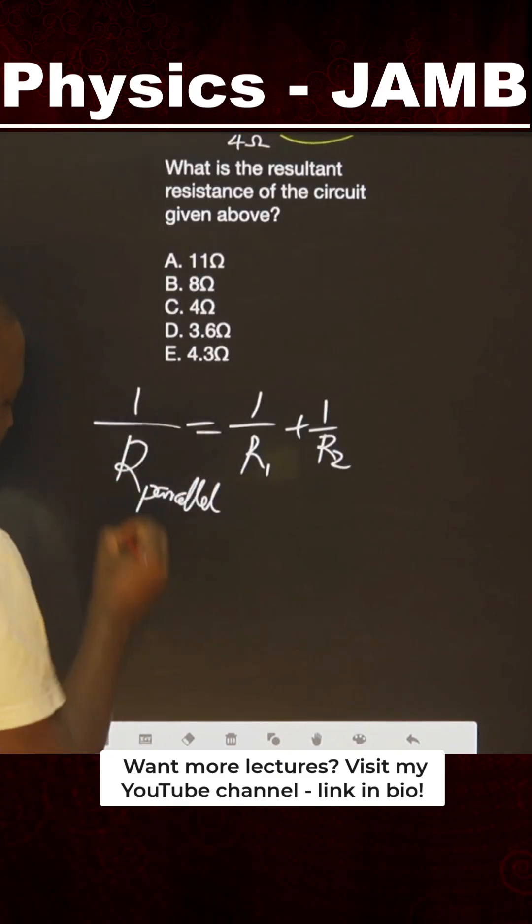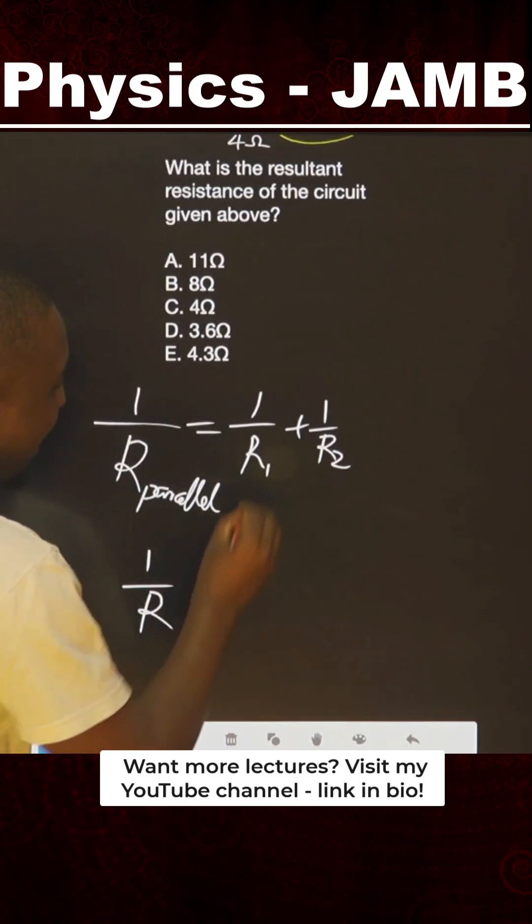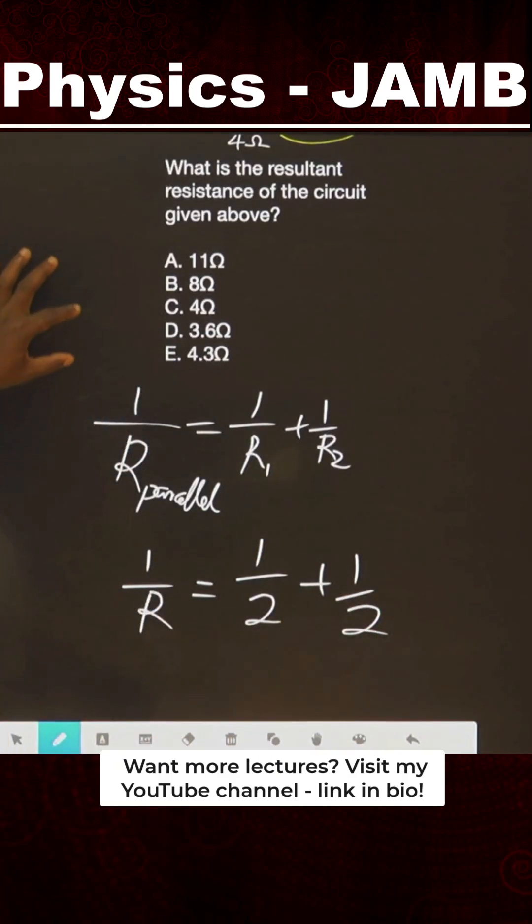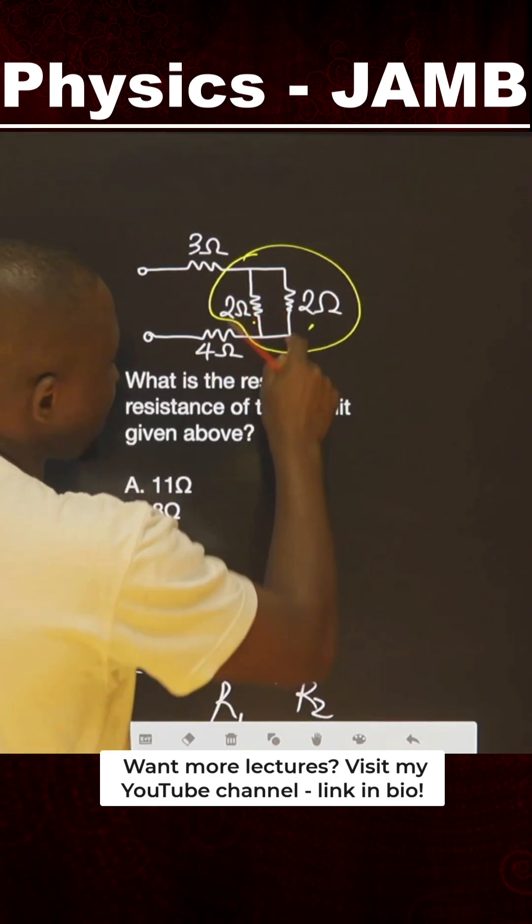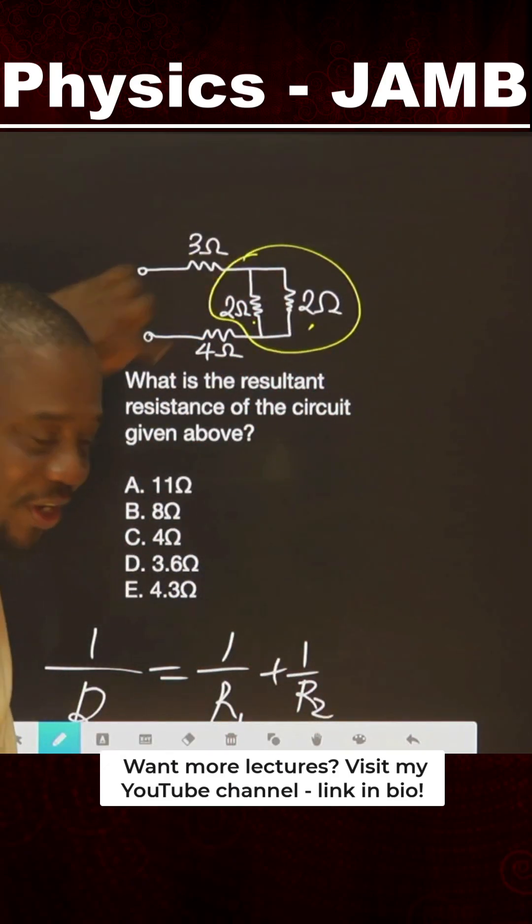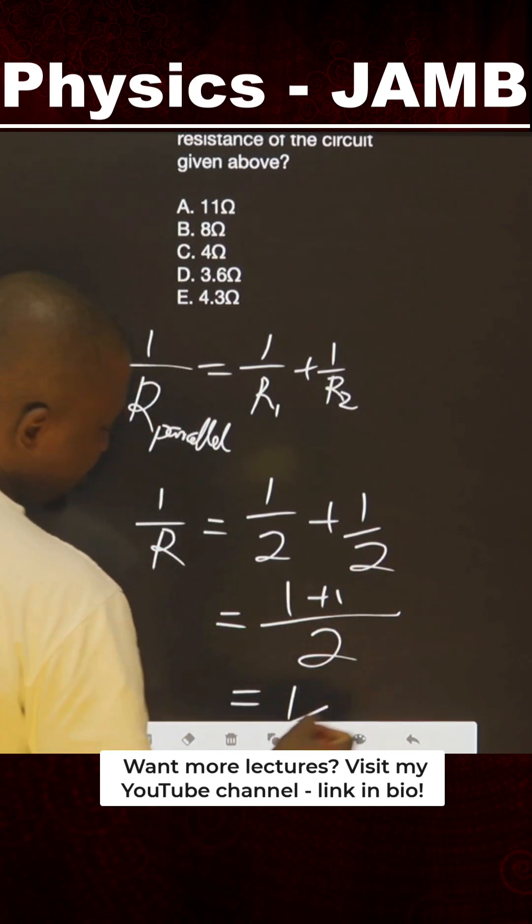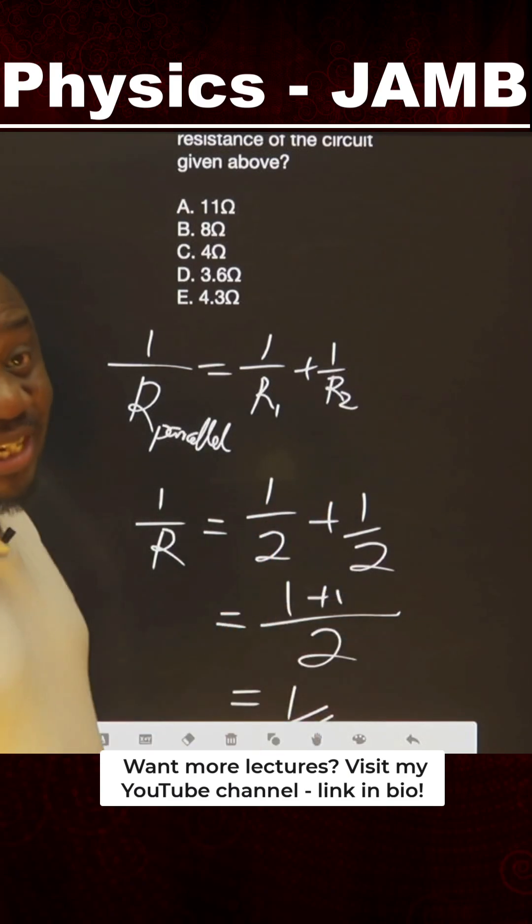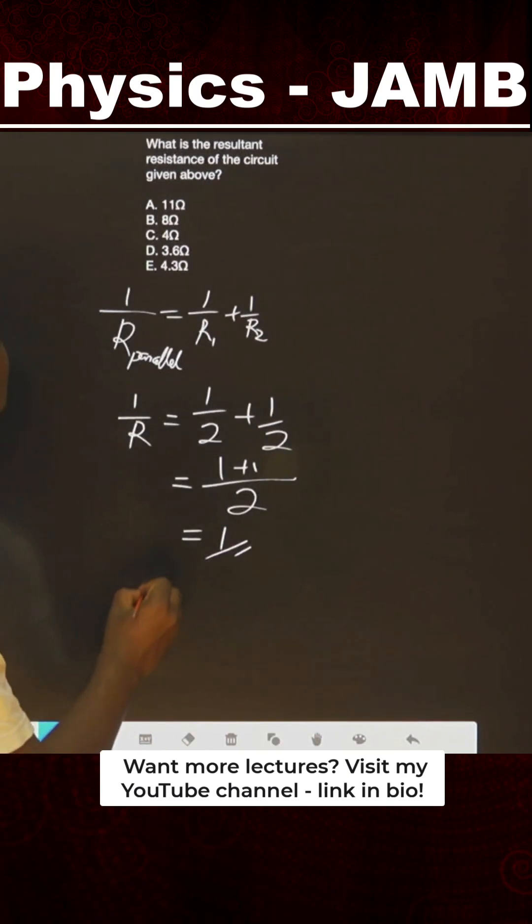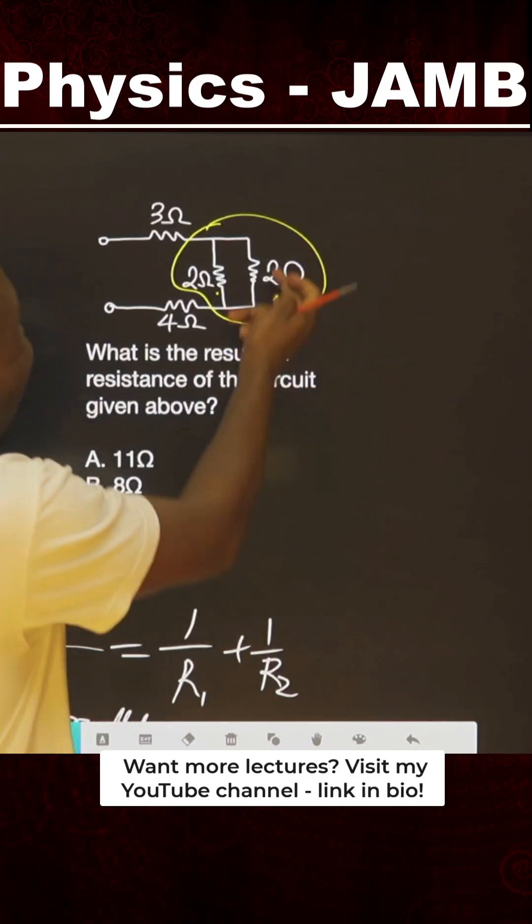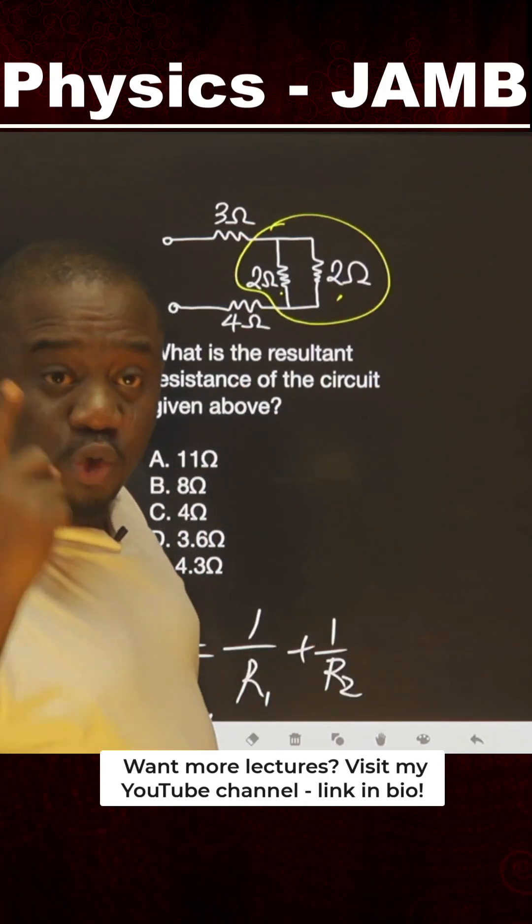So it's 1/2 + 1/2, that is this and this. 1/2 + 1/2 equals 2/2 = 1. You already know this is 1. Therefore 1/R equals 1/1. Cross multiply - R still remains 1. It means what these guys are contributing is 1Ω. The equivalent resistance of these two is 1Ω.